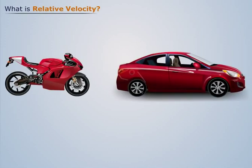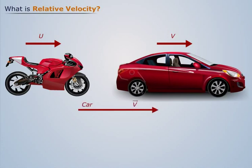Let us assume that the car is moving at a speed of v km per hour, and the bike is moving at a speed of u km per hour. Let vector v and vector u be the velocity vectors of the car and bike respectively.